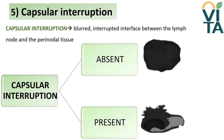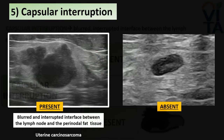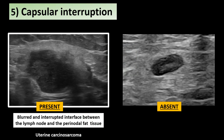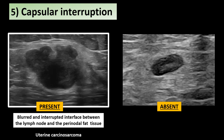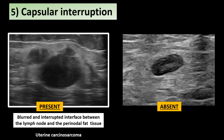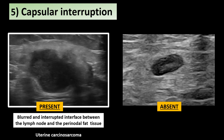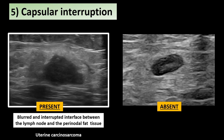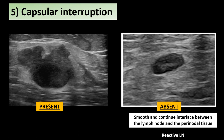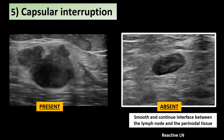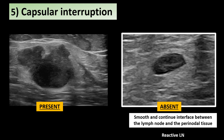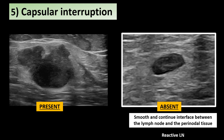Capsular interruption is seen as a blurred, interrupted interface between the lymph node and the perinodal tissue. It should be reported as present or absent. On the left, in a metastatic lymph node from carcinosarcoma, the borders are blurred and irregular and the capsule is interrupted due to projection into the perinodal fat tissue. On the other side, in a normal lymph node, the surrounding capsule is smooth and clearly separated from the perinodal tissue.